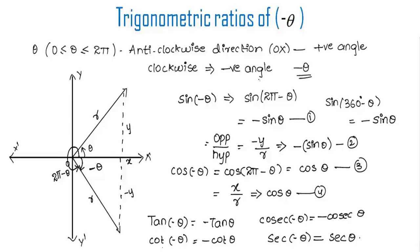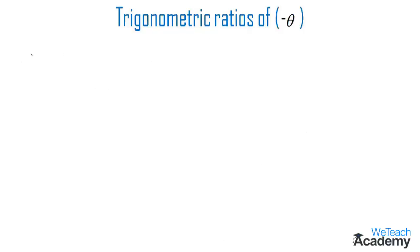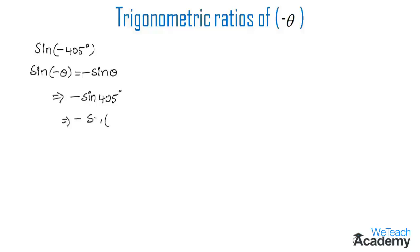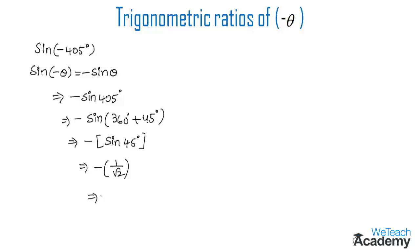Let us work an example: find the value of sin(minus 405°). Using sine(minus theta) equals minus sine theta, we get minus sin(405°). Writing 405° as 360° plus 45°, and using the identity sin(360° + theta) equals sin theta, we get minus sin(45°). Since sin(45°) equals 1/√2, the value of sin(minus 405°) equals minus 1/√2.